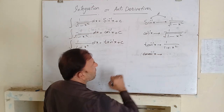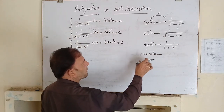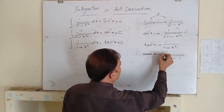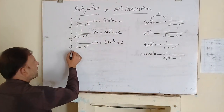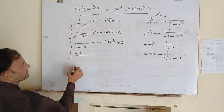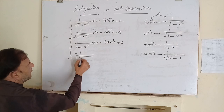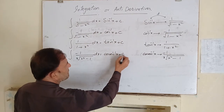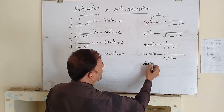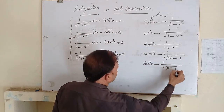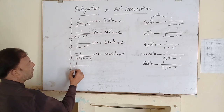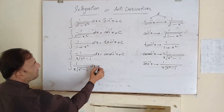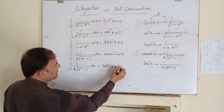For cosecant inverse of x: the derivative of cosecant inverse of x involves minus 1 over x times the square root of (x squared minus 1), so the integration of minus 1 over x times square root of (x squared minus 1) dx is equal to cosecant inverse of x plus c. Similarly, the derivative of secant inverse of x is 1 over x times square root of (x squared minus 1), so the integration of 1 over x times square root of (x squared minus 1) dx is equal to secant inverse of x plus c.